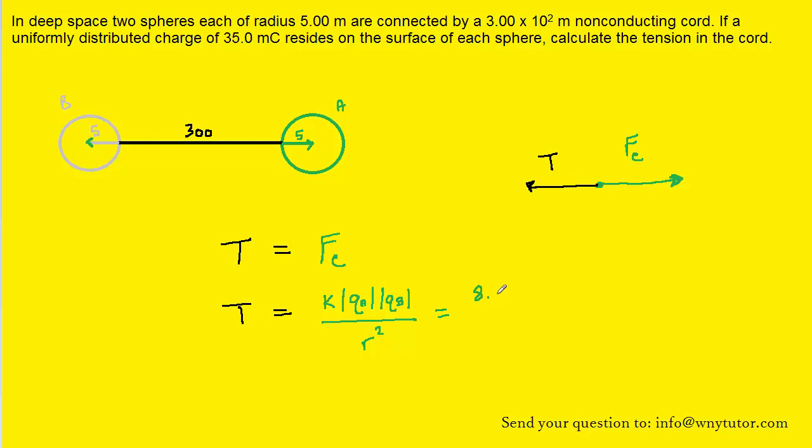It turns out that the constant K has a value of 8.99 times 10 to the power of 9. We will omit the units for clarity for now. The magnitude of charge A was given to us in the question. It's 35 millicoulombs. Be careful about millicoulombs. You're going to have to multiply by 10 to the minus 3 in order to convert millicoulombs into the standard unit of coulombs.